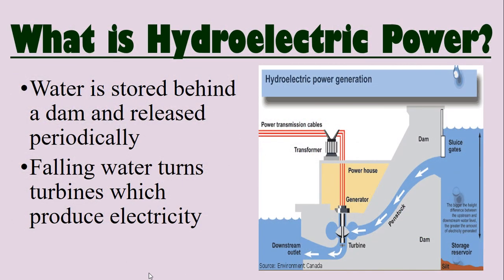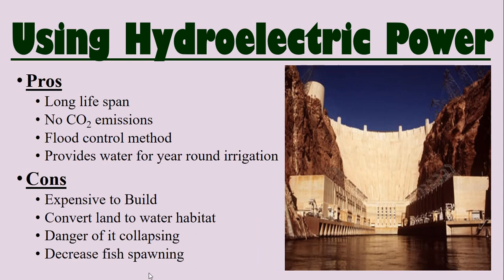The next one is hydroelectric power. This is when water is stored behind a dam and released periodically — the falling water turns turbines which produce electricity. The pros: dams have a long lifespan, there's virtually no CO2 emission, it's a flood control method since you can control what water comes in and out, it provides water for year-round irrigation, and the reservoir behind the dam can also be used for recreation.